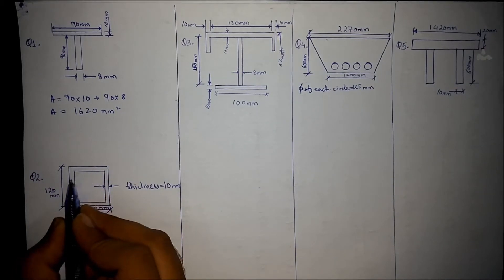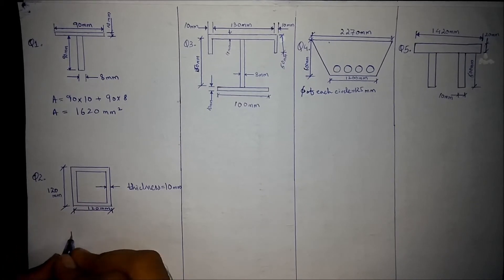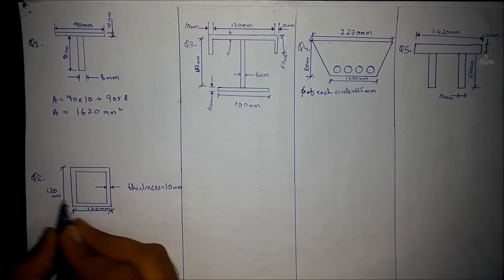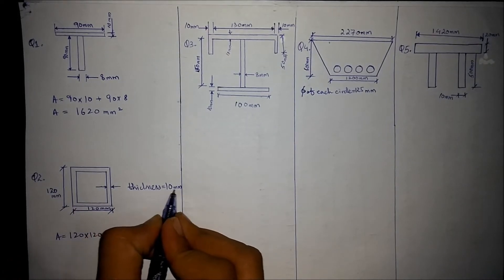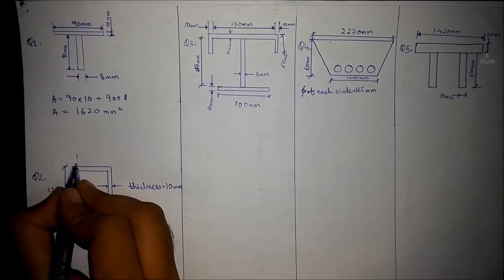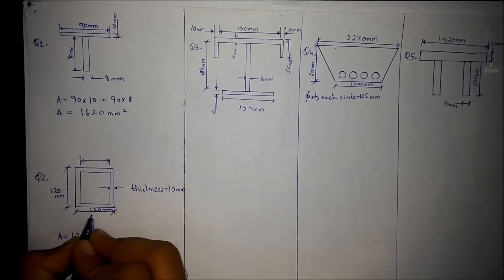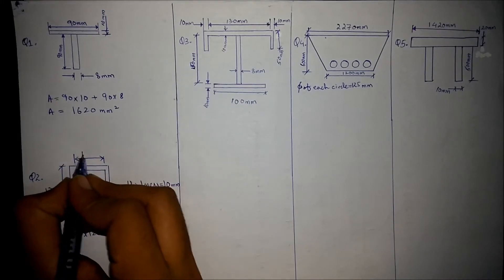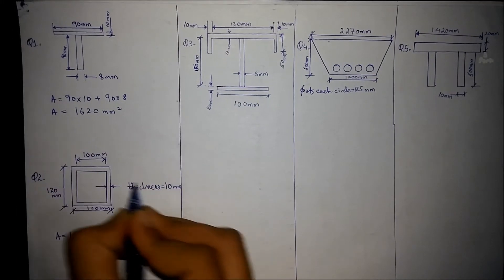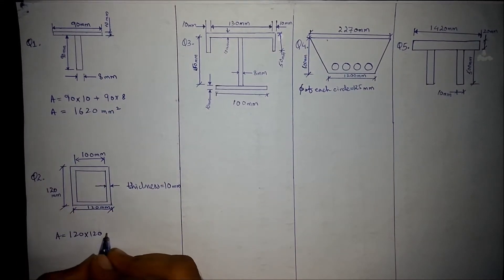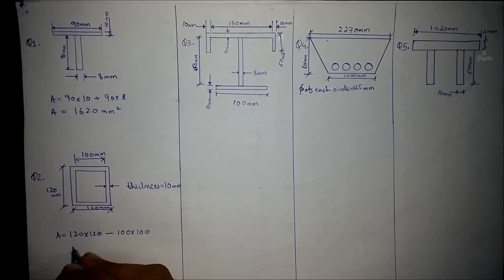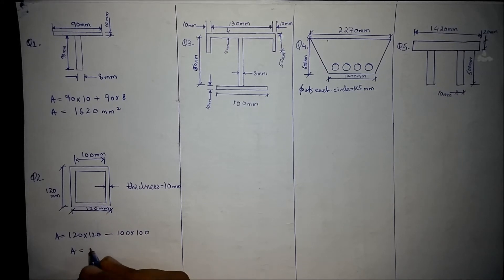Moving towards the second question — since it is a box section, consider the outside box first. The area of the outside box is 120mm × 120mm. Since the thickness is 10mm, the inner box dimension is 120 − 20 = 100mm on each side. Subtracting the inner void of 100mm × 100mm, we get an area of 4400 mm² for this cross section.